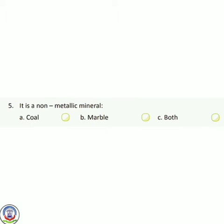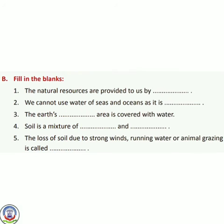Number 5 — it is a non-metallic mineral. अभी इनमें से कौन सा mineral non-metallic है? Options: coal, marble, both. Option is C, both — coal और marble दोनो non-metallic minerals हैं।